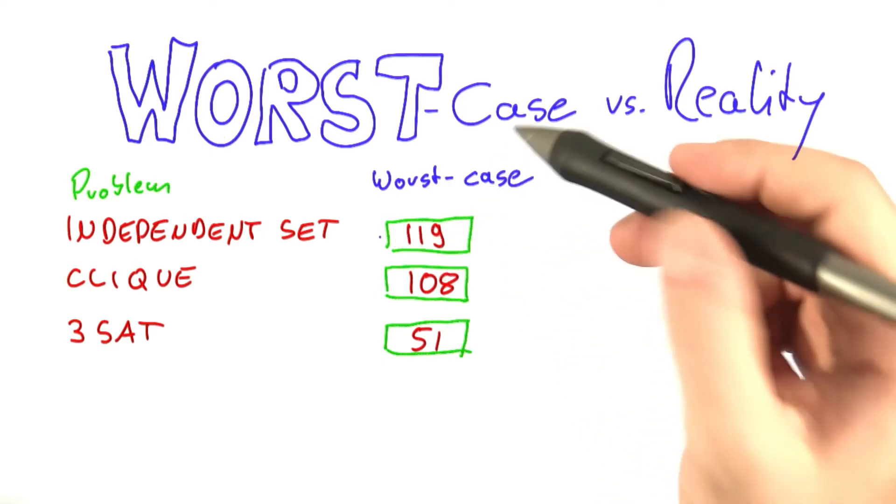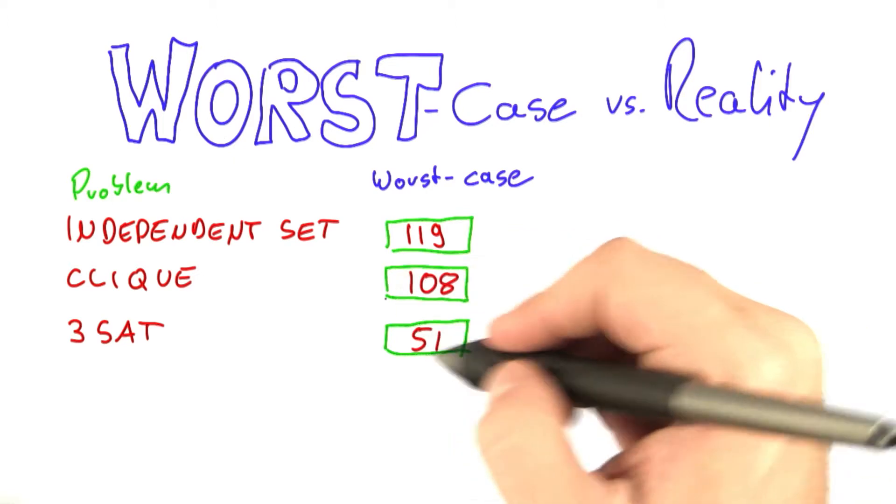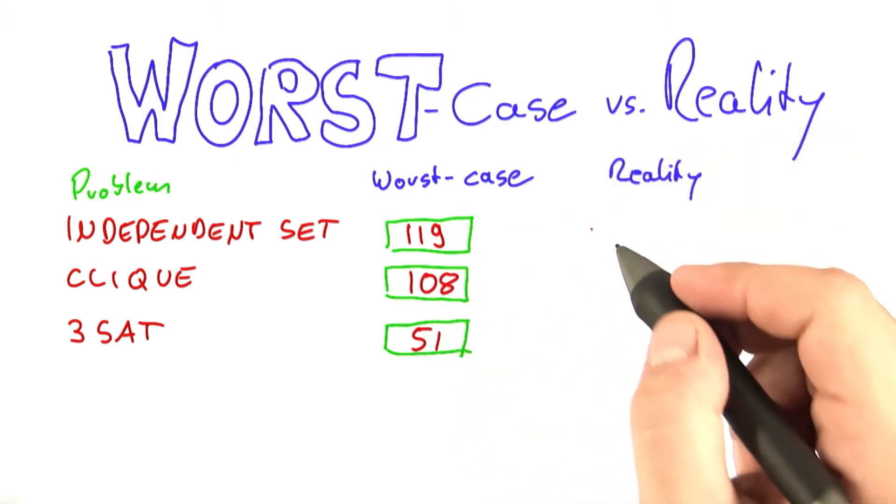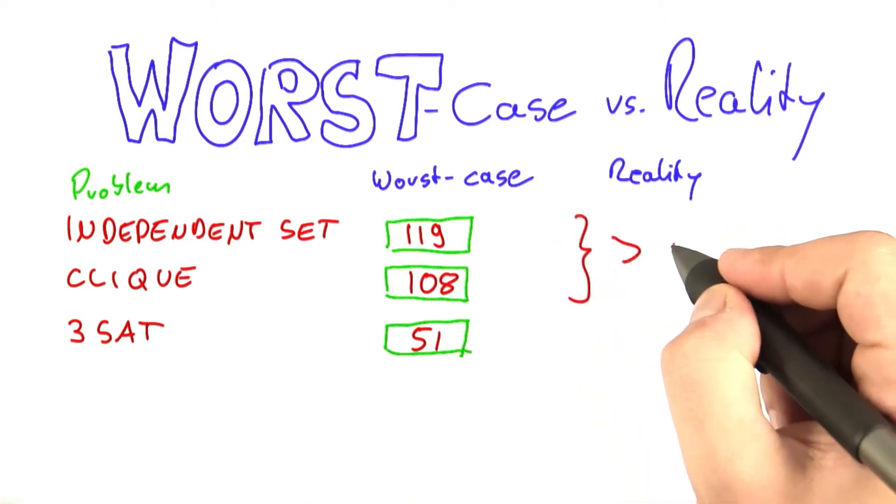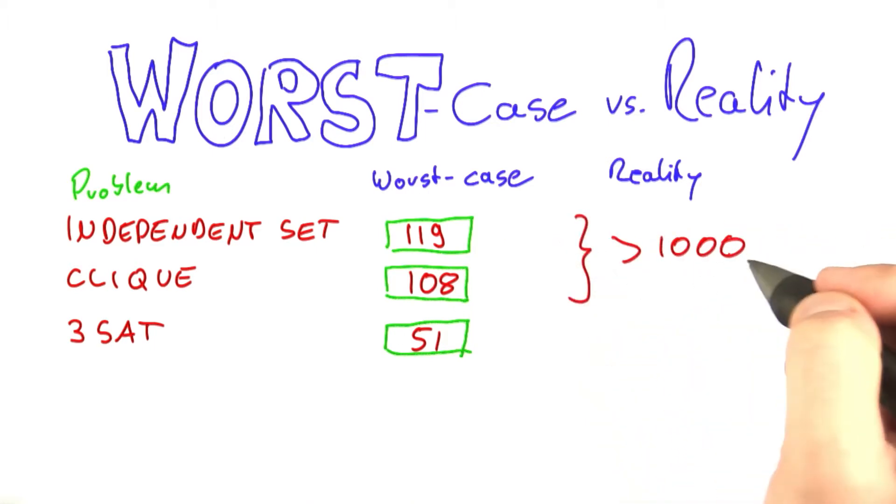And that's actually the surprising thing because if we look how well those algorithms perform in practice, they perform dramatically better. So for independent set and clique, you can usually solve instances far over 1000 vertices.